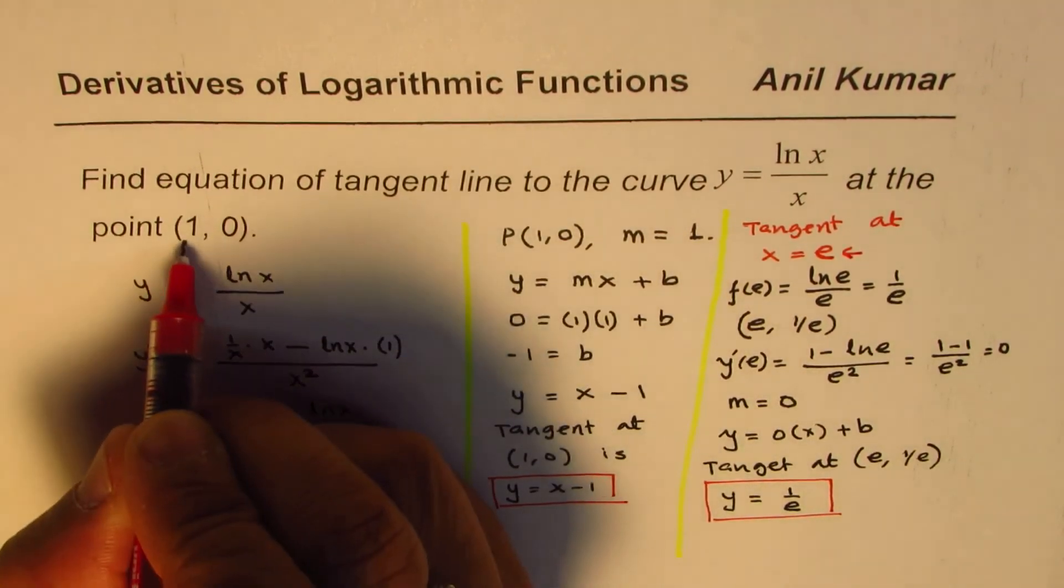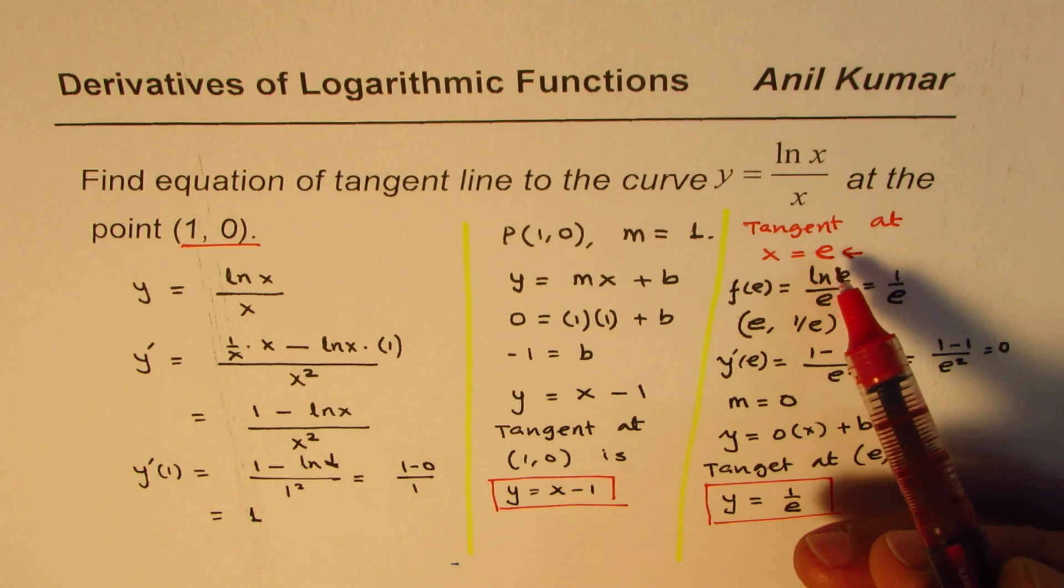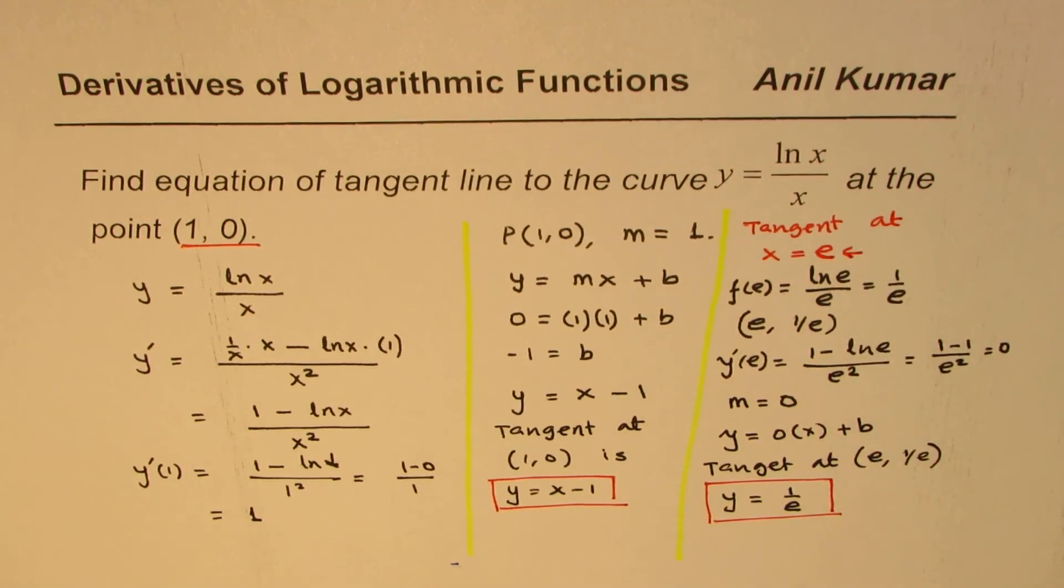(1, 0), which is x minus 1. We will also find it at any other point, just as we found here at e. So as an exercise, you can select some other point and find the tangent at that point. I am Anil Kumar, and I hope that helps. Thank you, and all the best. Thank you.